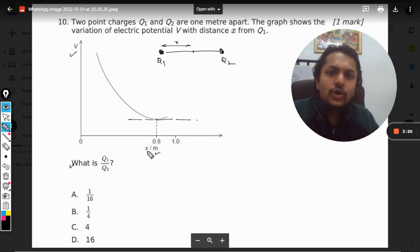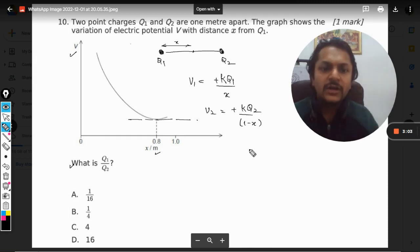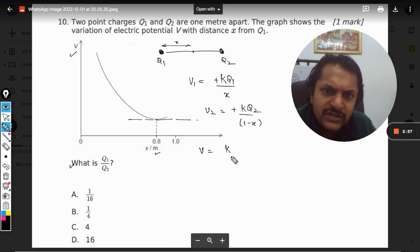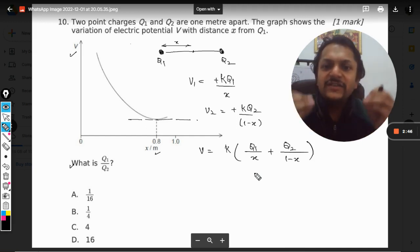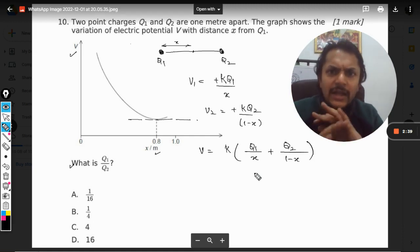V1 will be taken as plus kQ1 divided by x, and V2 can be taken as kQ2 divided by 1 minus x. So the total potential will be the addition of this. Taking k common, it becomes Q1 by x plus Q2 divided by 1 minus x. This is the function for which the graph is created, and it has a minimum value at 0.8.